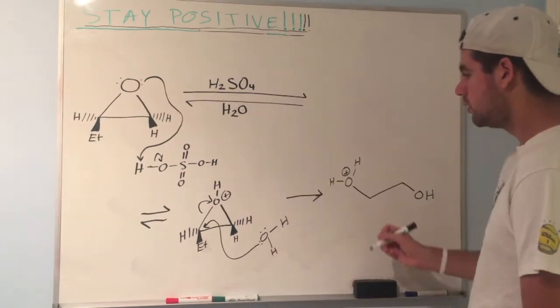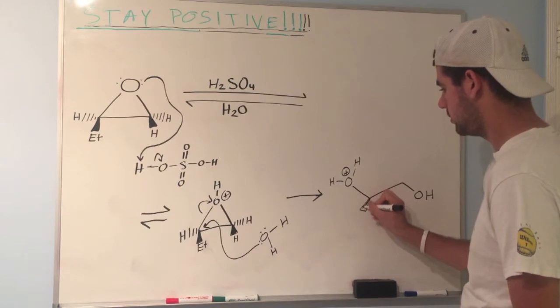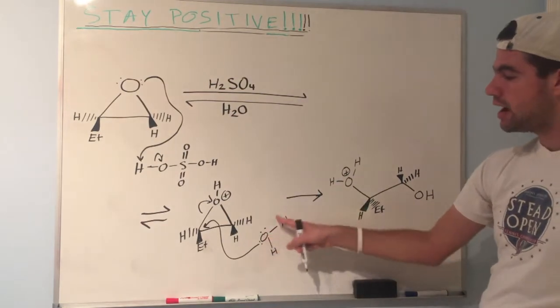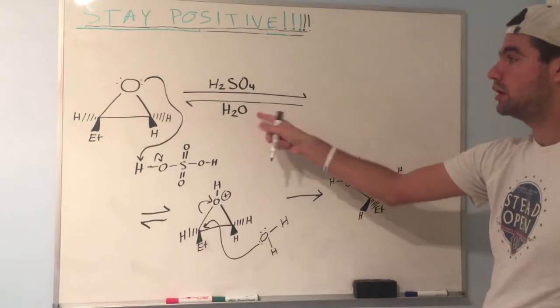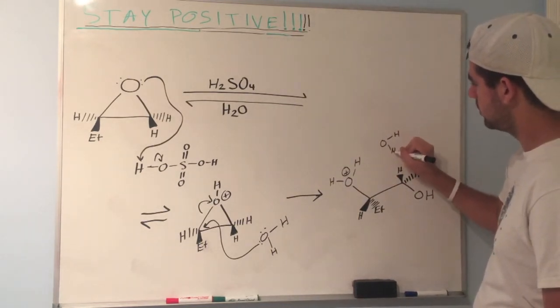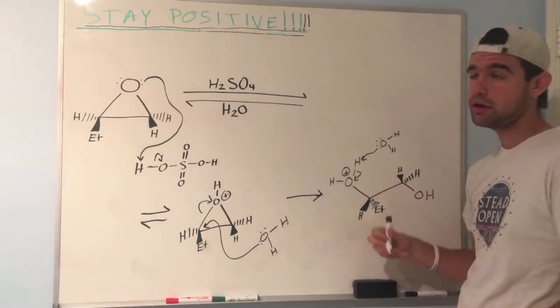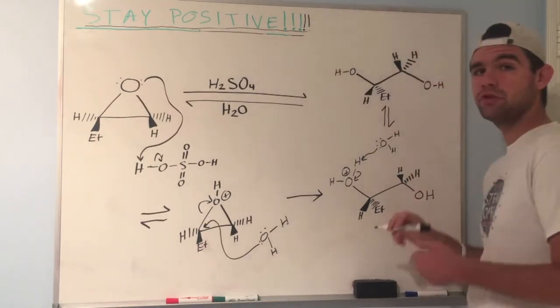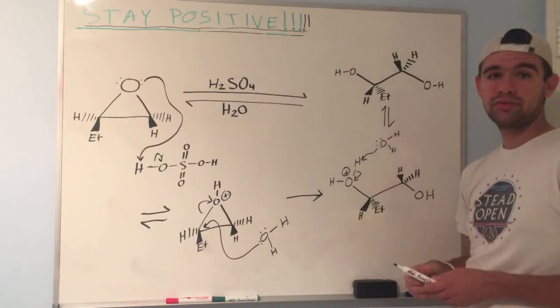Water comes in, attacks this carbon, opens the epoxide ring. Remember inversion of stereochemistry, so let's have that inverted. We have oxygen with three bonds again from this water, so we have to deprotonate using another water molecule nearby. Grab one of those hydrogens, send that over to oxygen, and we can write our final product. We made a diol - two alcohols. Let's move on to the next problem.